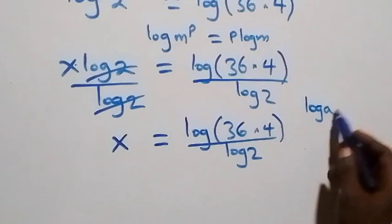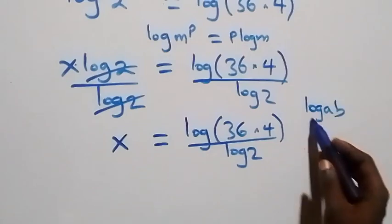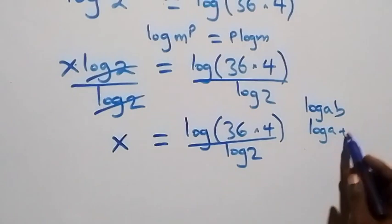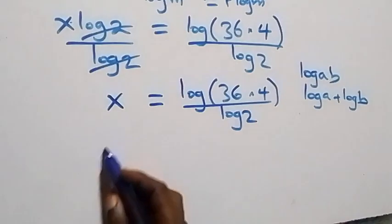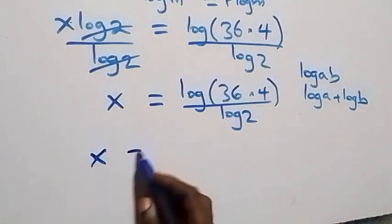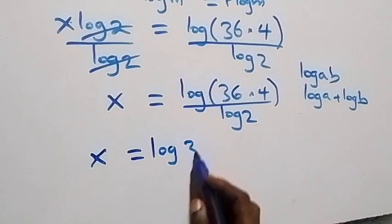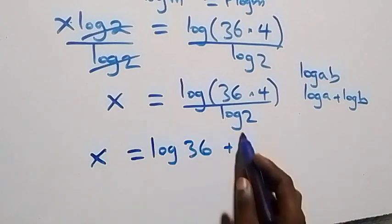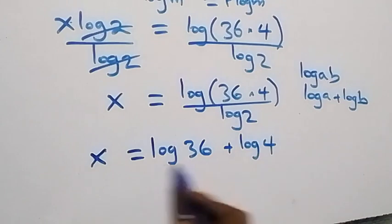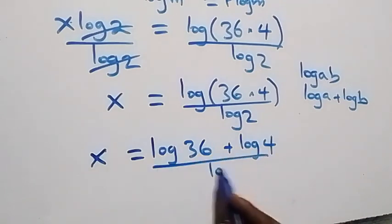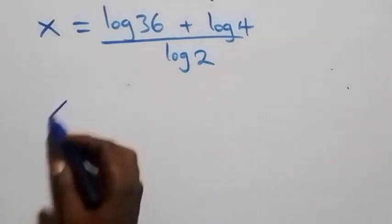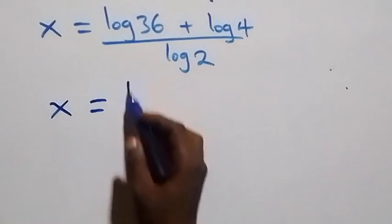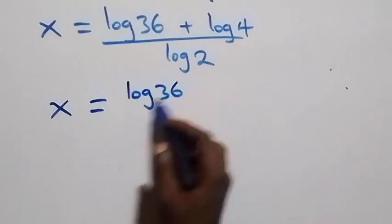Using the law of logarithms, when we have log a times b, this is the same as log a plus log b. So this becomes x equals log 36 plus log 4, all over log 2. We separate this into two fractions: x equals log 36 over log 2 plus log 4 over log 2.